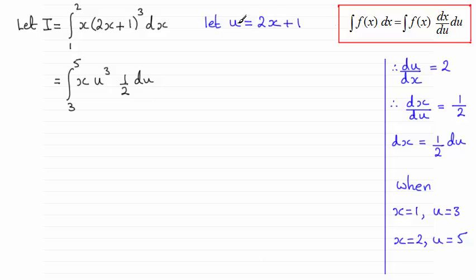So if you rearrange this, x will equal u minus 1 all over 2. And I would substitute that in. And we would get this result here.